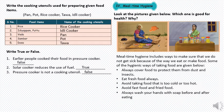Now, meal time hygiene. Meal time hygiene includes the ways to make sure we do not get sick because of the way we eat or make food. What are the hygiene rules to be followed during meal time? Always cover food to protect them from dust and insects. Eat fresh food always. Avoid taking food that is too cold or too hot. Avoid fast food and fried food. Always wash your hands with soap before and after eating.